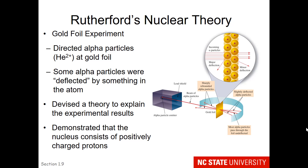What he discovered is that most of the particles went straight through the gold foil, so that indicates that a lot of the space occupied by the atom is actually empty. However, there were major deflections, which indicate that there was a centralized area of positive charge in the atom, and also some minor deflections, which indicate that there was perhaps an area of negative charge. This gave scientists information that the nucleus consists of a very densely centralized, positively charged area, and that most of the area of the atom is empty.